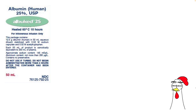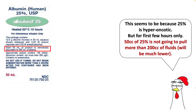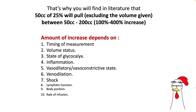You have to look at the label on the 25% albumin. Each 50 cc of this product is osmotically equivalent to 250 ml of plasma. That means if you give 50 ml, the total plasma volume increase is going to be around 250 cc. That means 50 cc of 25% albumin is not going to pull more than 200 cc of fluid, and certainly it will be slightly lower because some albumin will escape from the intravascular compartment. That's why when you read the literature about 25%, it will always tell you that it pulls fluid between 50 cc to 200 cc — that is 100 to 400% increase. The amount of this increase depends upon multiple factors: timing of measurements, volume status of the patient, state of glycocalyx, inflammation, and various other etiologies.